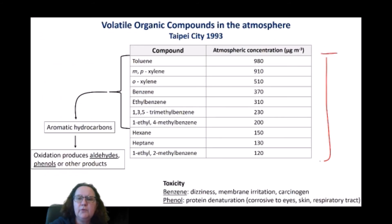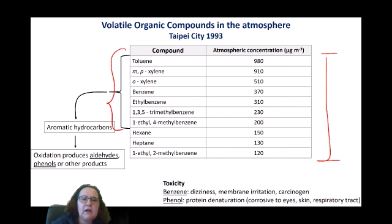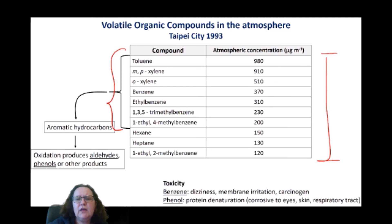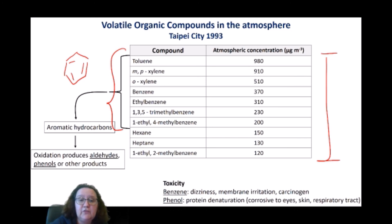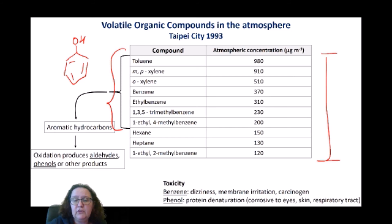As an example of the type of hydrocarbons found in a polluted atmosphere, the ones highlighted here are typical volatile organic compounds. As you can notice, they tend to be derived from benzene — a structure of six carbons in a ring with alternating double bonds. These compounds themselves are a pollution issue: benzene is a known carcinogen. Phenol, which is also a derivative of benzene — benzene with a hydroxyl group — can interfere with protein denaturation and is corrosive.